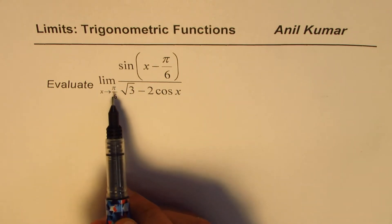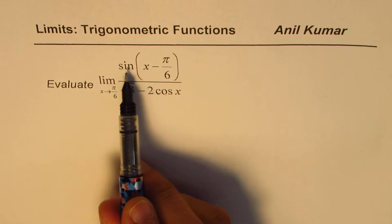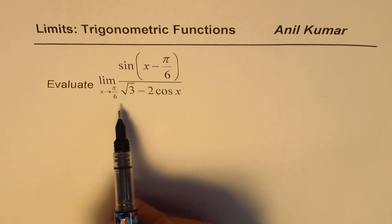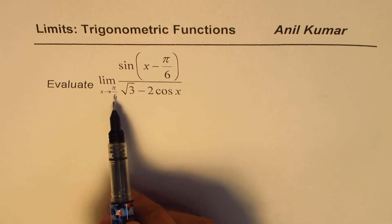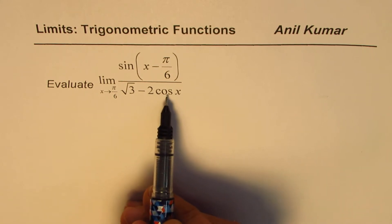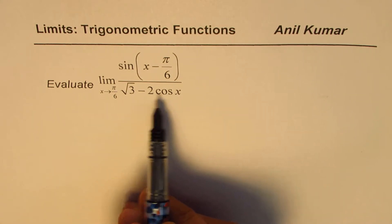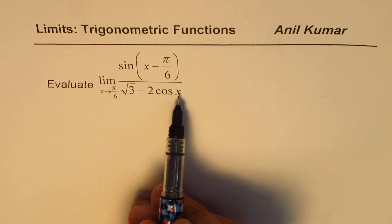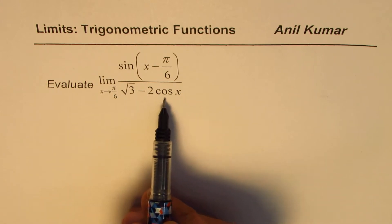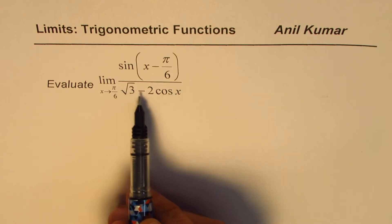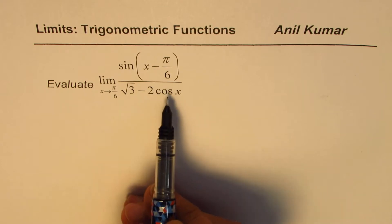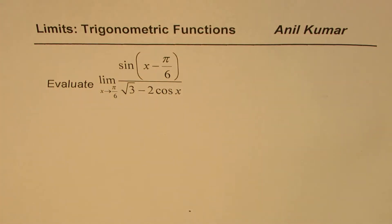If you substitute π/6, you get sin(0) in the numerator, which is 0. In the denominator, cos(π/6) is √3/2, so we get √3 − 2·(√3/2) = √3 − √3 = 0. So we get the 0/0 indeterminate form.